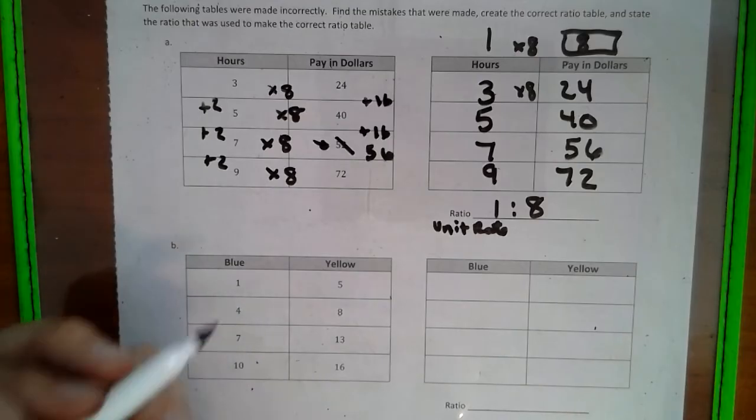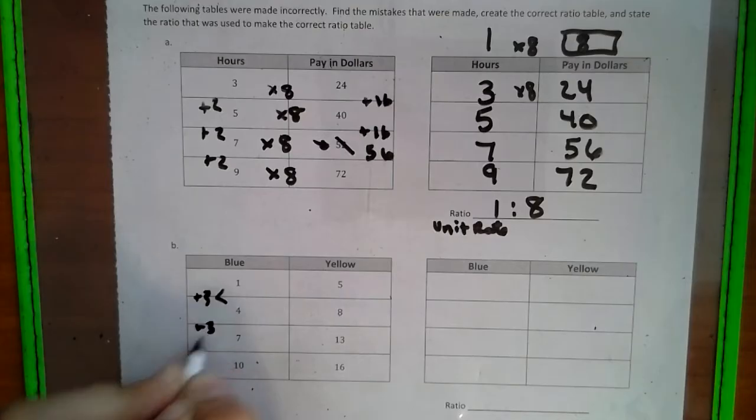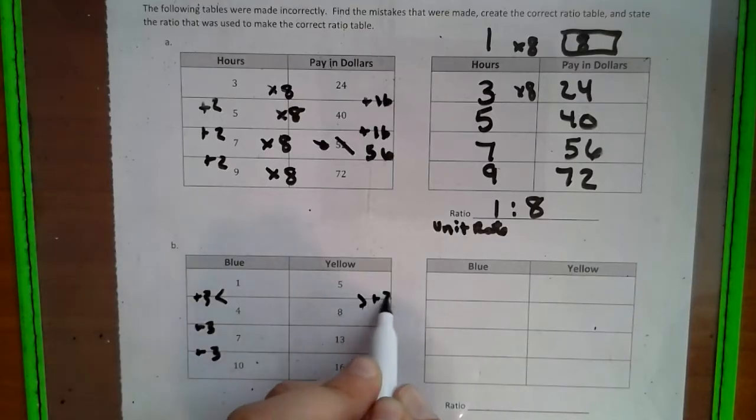So now let's look at this one. Let's check our vertical pattern. So that's add 3, add 3, add 3. So we're good there. But here we have add 3, add 5, add 3. So we know something's wrong in this column.